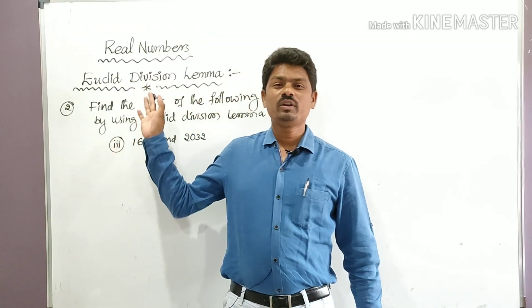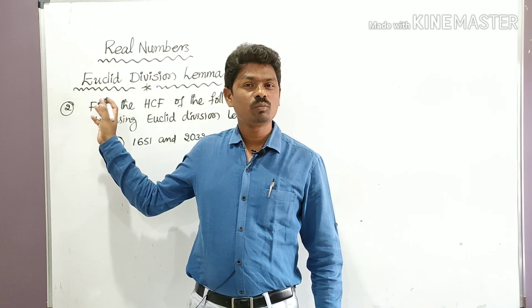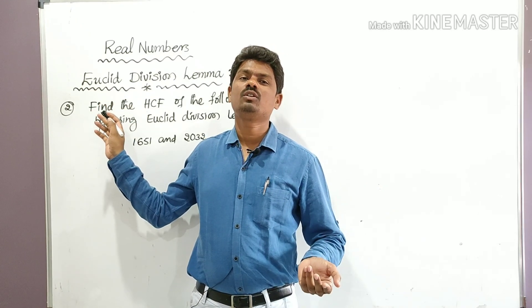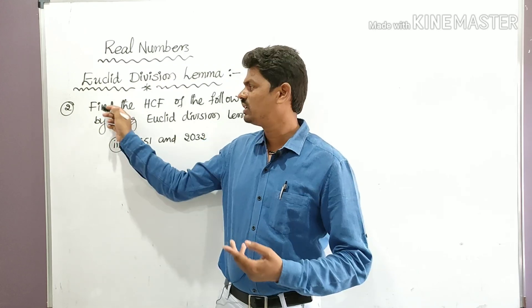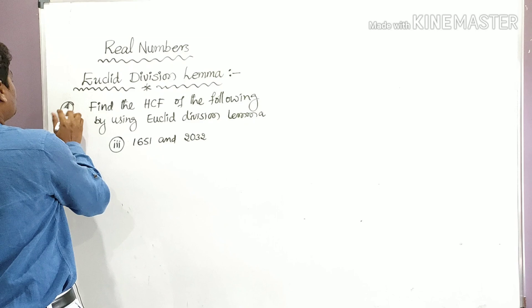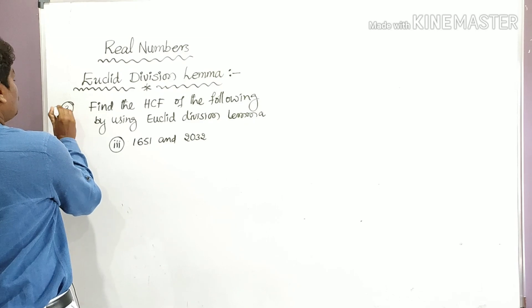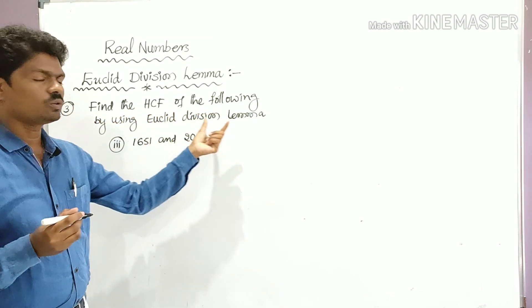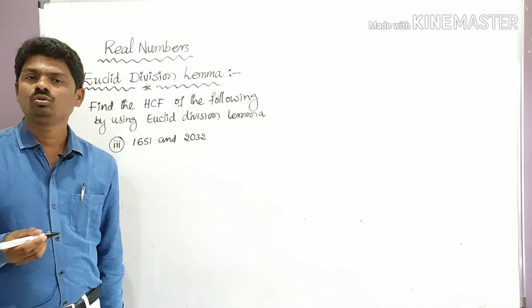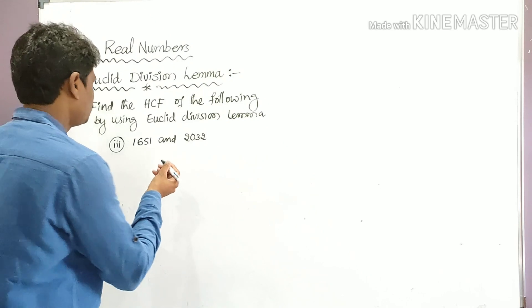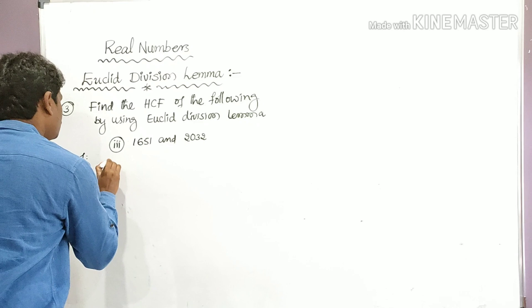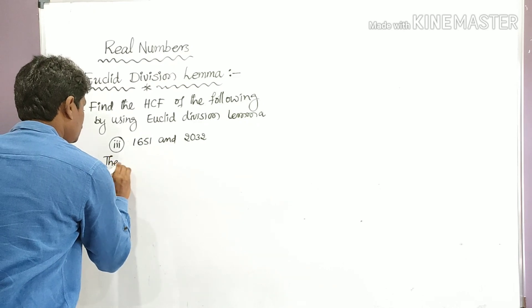Hello students, welcome to Learn More Math. Today we are going to learn about finding the HCF — highest common factor — of given two positive integers. This is the third question: find the HCF of the following by using Euclid's Division Lemma. The two numbers are 1651 and 2032.